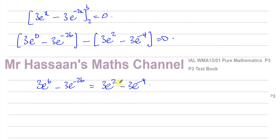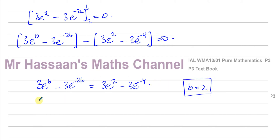These two expressions look almost identical. You've got 3e and 3e, minus 3e and minus 3e. On the left, the powers are b and minus 2b; on the right, they are 2 and minus 4. So we can see that b must equal 2, because if b is 2, then 3e to the power of b becomes 3e to the power of 2, and 3e to the power of minus 2b becomes 3e to the power of minus 4, which matches the right-hand side exactly. So b equals 2.